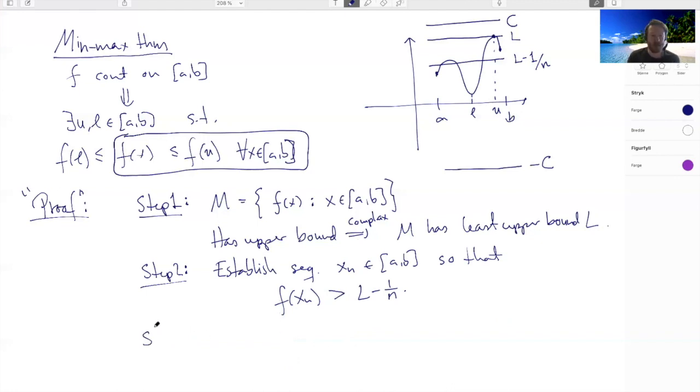Well we apply Bolzano-Weierstrass. So in step three, use Bolzano-Weierstrass to prove there exists a point u in [a,b] such that f(u) is bigger than or equal to L. So basically what you need to do here is to combine Bolzano-Weierstrass with what you know in step two.